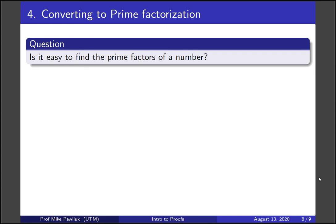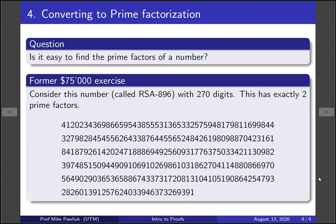Well, here's an example for you. This used to be a $75,000 exercise. There was a group that would pay you $75,000 to answer this question. So this number, which is called RSA 896, it has 270 digits, and you're told that it has exactly two prime factors. But no one other than the people who set the problem knows what those are. So if you can find the two prime factors of this number, you would have won $75,000.